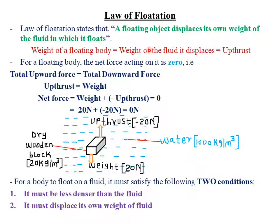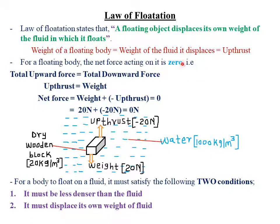From Archimedes' principle, we can establish that the weight of the fluid displaced will always be equal to the upthrust. So in short, the weight of a floating body will always be equal to the upthrust. This statement will be very key when we look at calculations involving floating and sinking. The weight of a floating body equals the weight of the fluid displaced, which also equals the upthrust exerted on that body by the fluid.